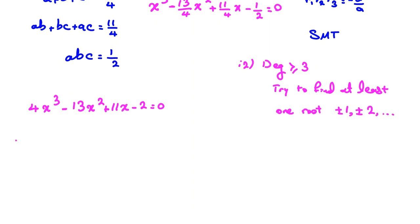If you check x = 1: 4 - 13 + 11 - 2 = 0. So x = 1 is a root, and you can factorize (x - 1).